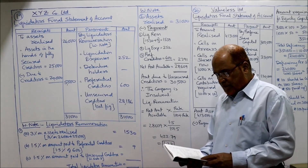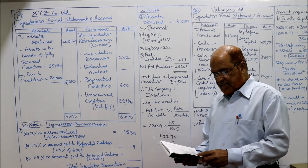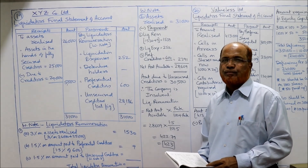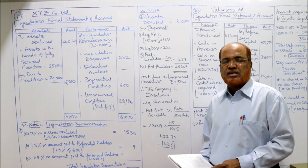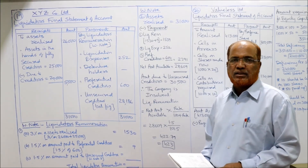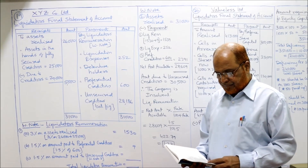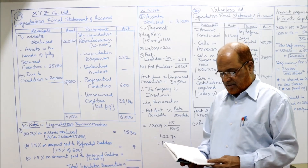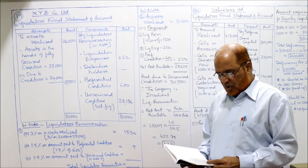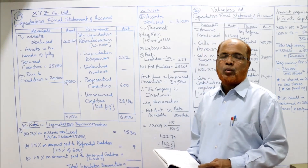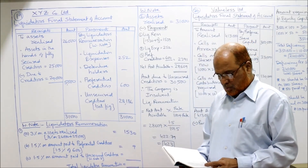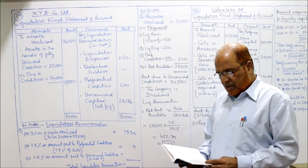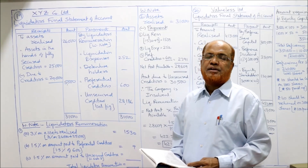XYZ Company Limited went into liquidation with the following liabilities: secured creditors 20,000, securities realized 25,000 — giving a surplus of 5,000. Preferential creditors 600, unsecured creditors 30,500. Liquidator's out-of-pocket expenses 252. The liquidator is entitled to remuneration of 3% on amount realized including securities in the hands of creditors.